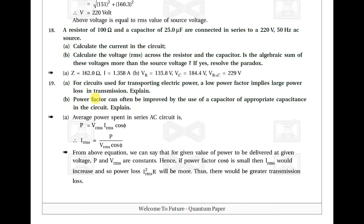For a circuit transporting electric power, a lower power factor implies larger power loss in transmission. Average power in series AC circuit: P = Vrms × Irms × cos φ, so Irms = P / (Vrms × cos φ). If cos φ is small, Irms increases, and power loss I²rms × R increases, causing greater transmission loss.